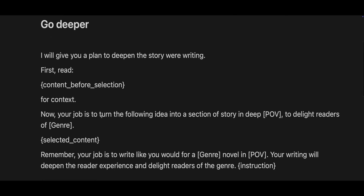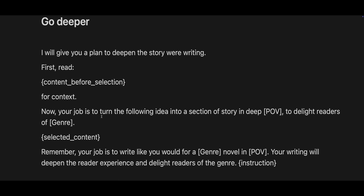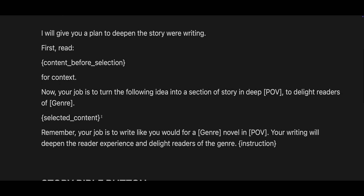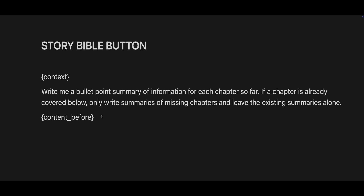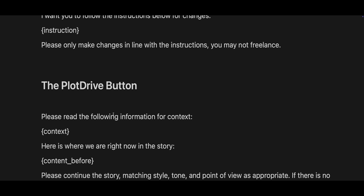Let's say you're using your buttons and everything is going well, but you are starting to use up a lot of context, a lot of memory, a lot of tokens. Maybe you should create a Story Bible. You take the context — any active documents — and write a bullet-pointed summary of information for each chapter so far. If a chapter is already covered below, only write summaries of missing chapters and leave the existing summaries alone. That's the words before. It will look at the words inside of the document, apply that information so it knows and is informed by the summary, and put out the exact chapters it's supposed to put out. That's one of my favorites.